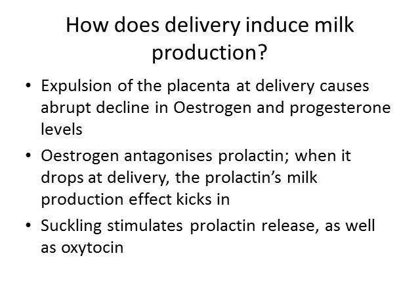If delivery induces milk production, how does it do that? The placenta makes estrogen and progesterone, and once it is delivered there's a sudden decline in estrogen and progesterone levels in the mother's bloodstream. However, the mother's pituitary gland is still making prolactin, so you have an increase in prolactin with a drop in estrogen. Estrogen antagonizes prolactin — it prevents prolactin from working. So in the presence of high estrogen, prolactin cannot fully manifest its effect to make increased milk. Once that estrogen drops, prolactin is unopposed and can generate as much milk as it likes.